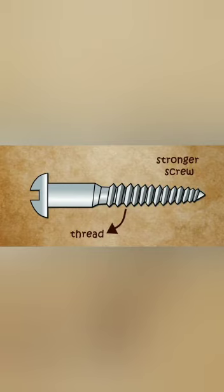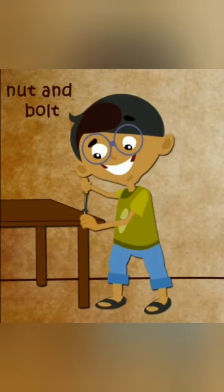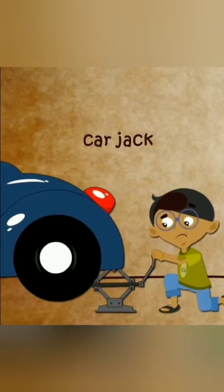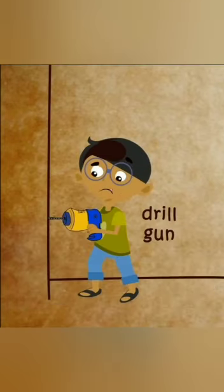The strength of a screw's hold depends on the width of the thread and the distance between them. The screw has become an integral part of the mechanical age. It can be used to hold things together, lift heavy loads, and drill holes on objects.